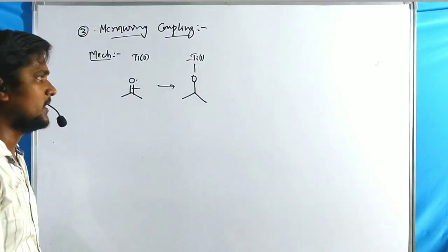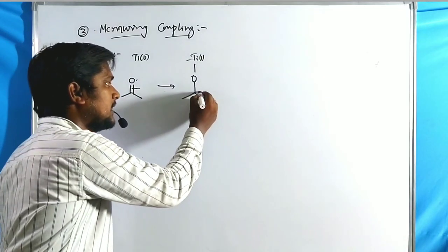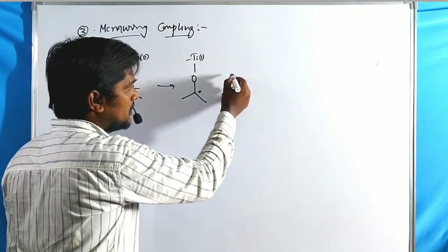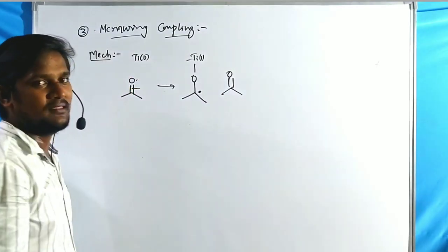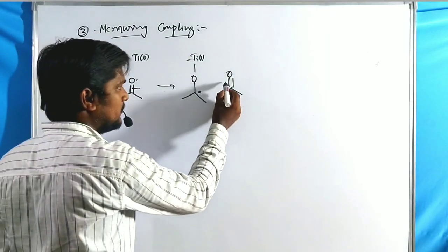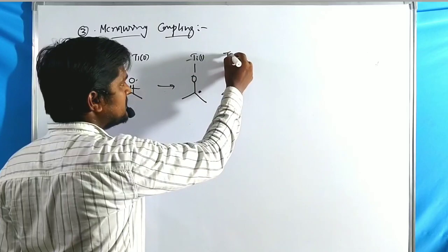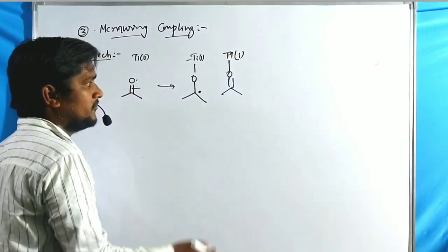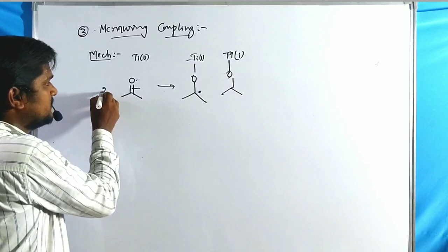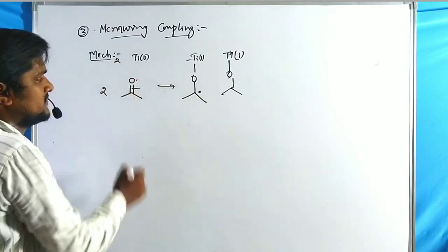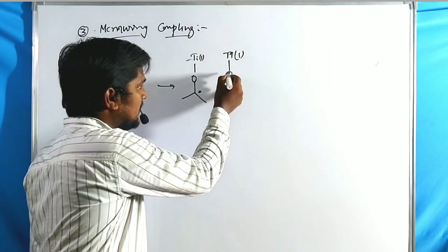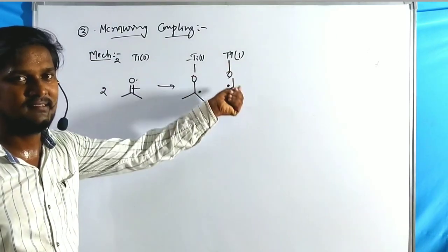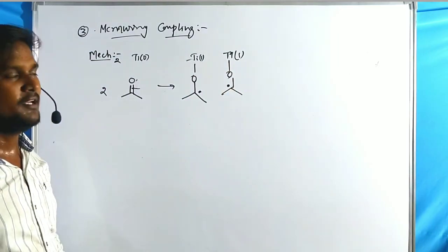This forms a +1 oxidation state with one unpaired electron. That unpaired electron can react with another carbonyl compound in the same manner. With two moles of carbonyl and two moles of titanium, it forms oxygen-carbon free radicals on the titanium surface.